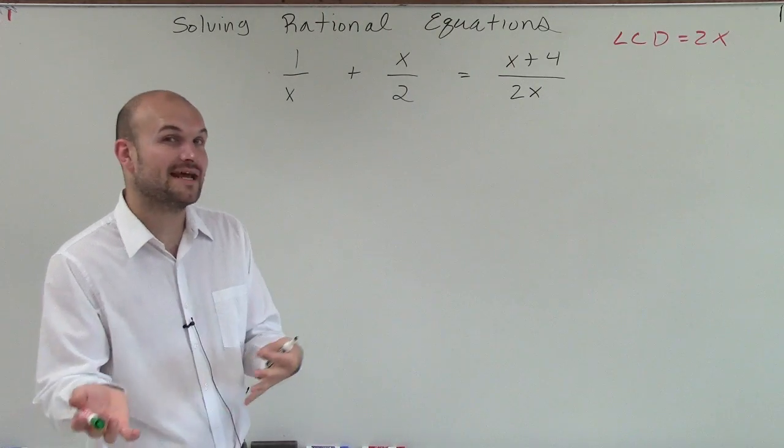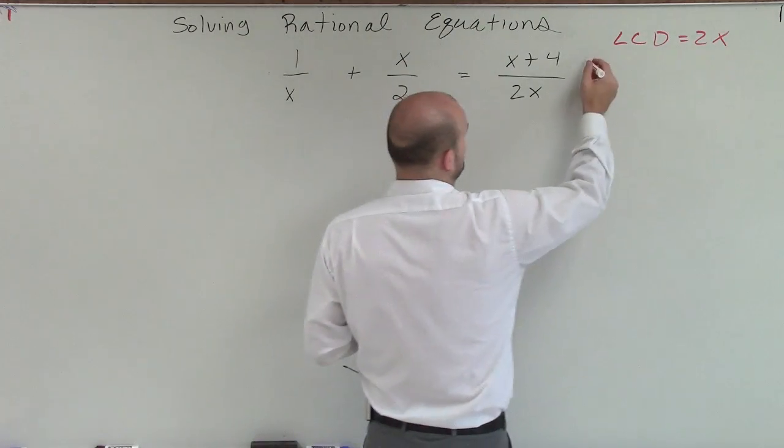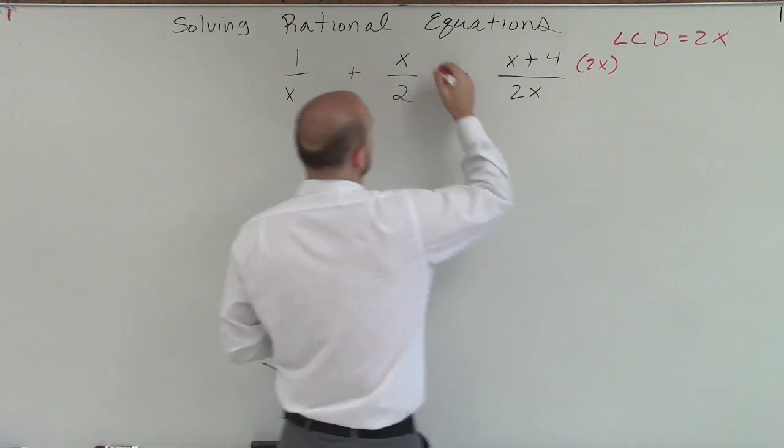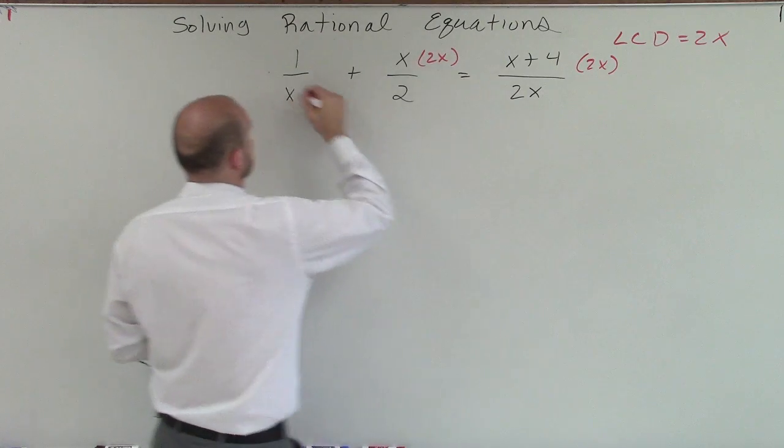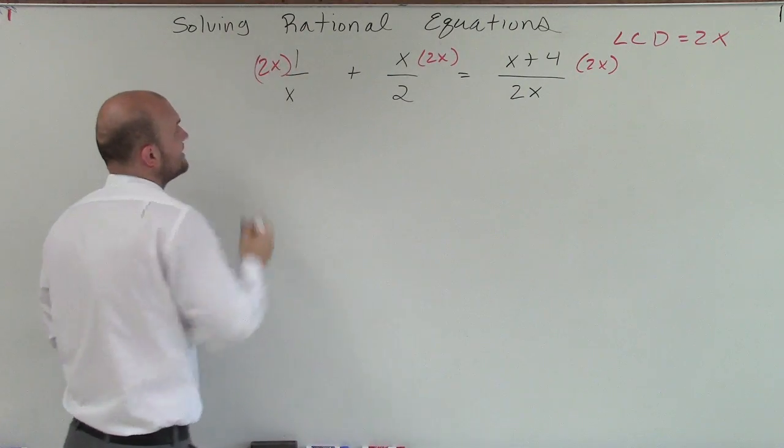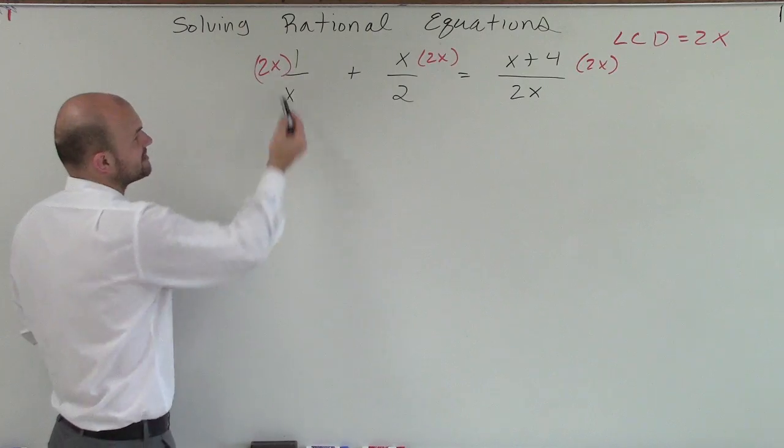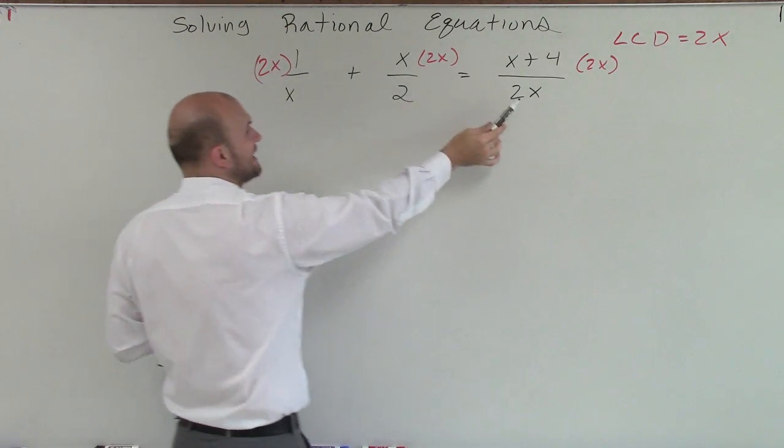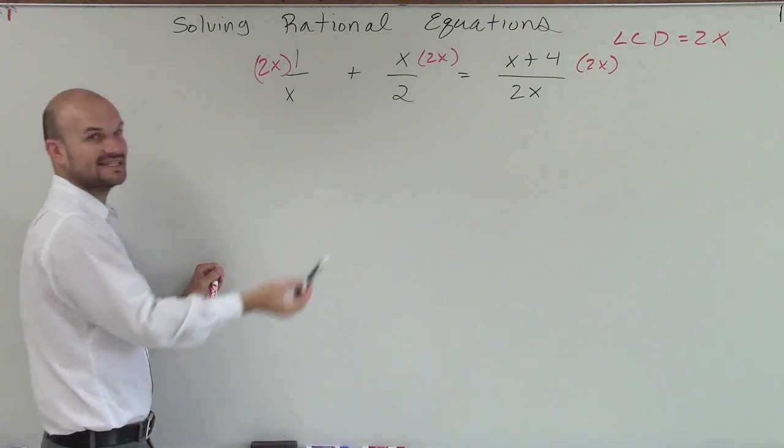So now, to eliminate my denominators, I'm going to multiply every single term by my LCD. And the way that this eliminates my fractions now is because now I have a part in each denominator that I know divides into LCD.